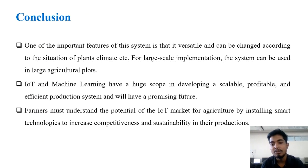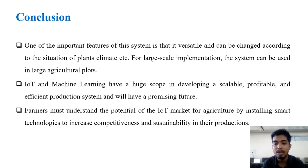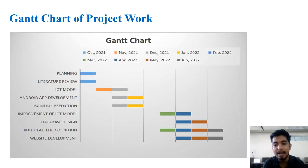In conclusion, one of the most important features of the system is that it is versatile and can be adapted according to the situation of the plants, climate, etc. IoT and machine learning have huge scope in developing a scalable, profitable, and efficient production system. Farmers must understand the potential of the IoT market for agriculture by installing smart technologies to increase competitiveness and sustainability in their productions.